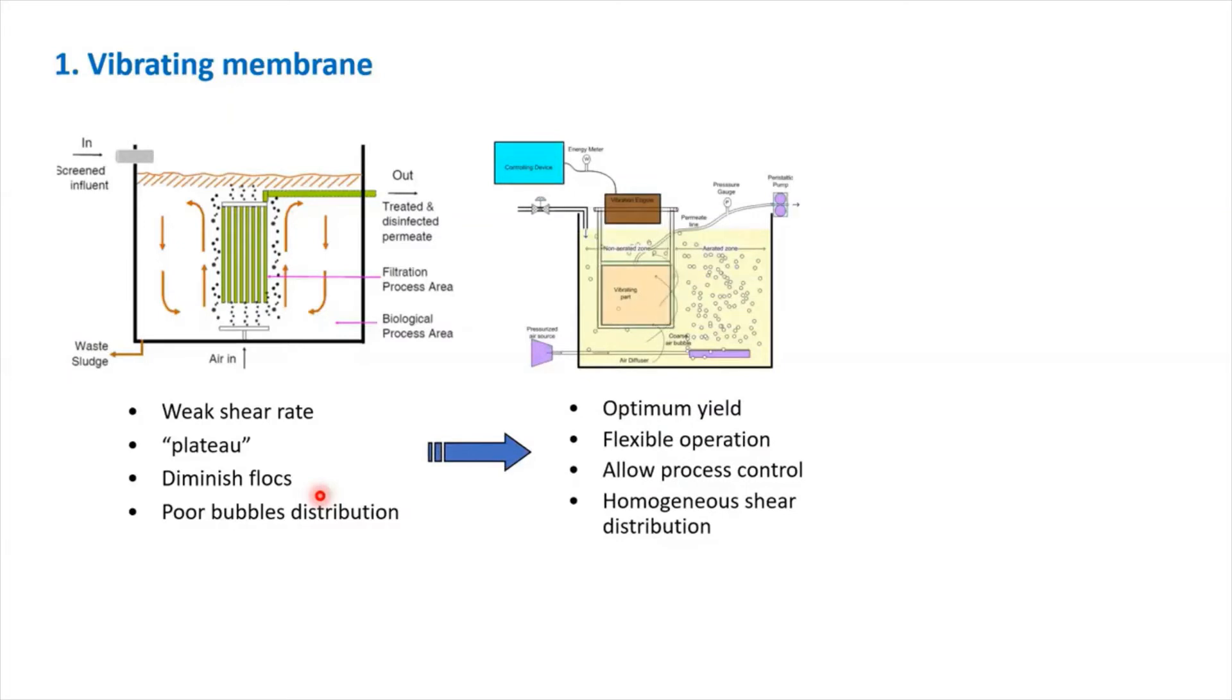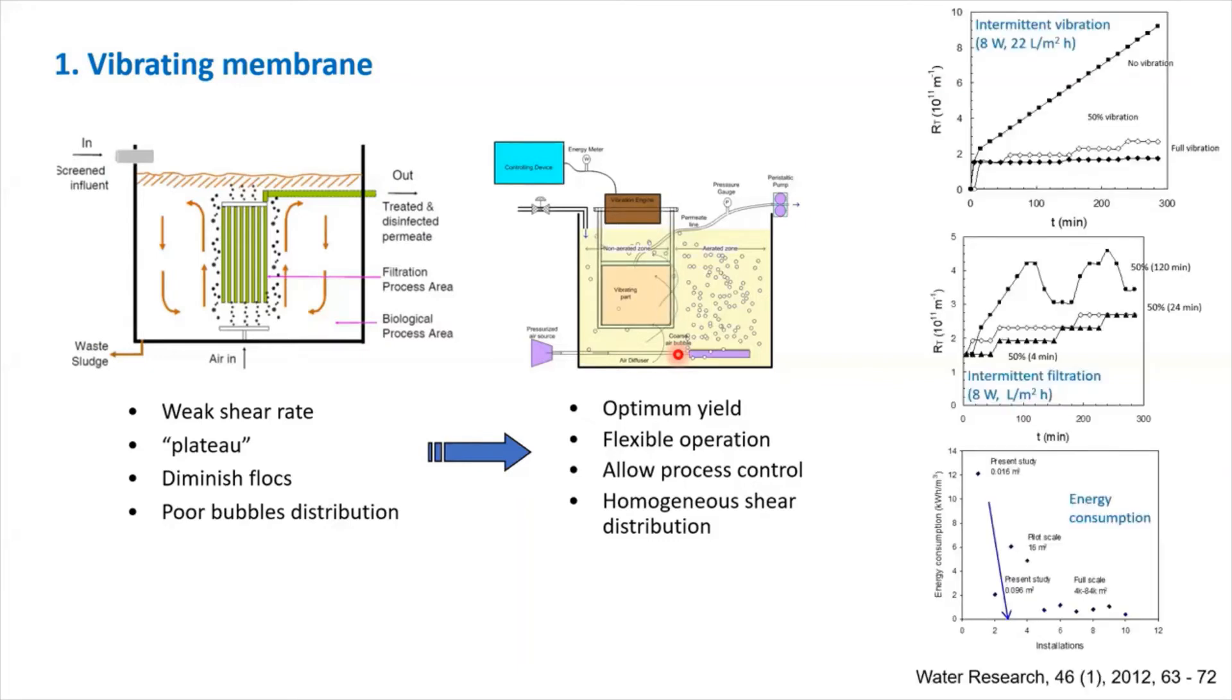What I did in my study was, instead of using the extensive aeration, why don't we just vibrate the membrane, so we can optimize the yield of energy on the membrane surface. It is flexible, which means we can vibrate it when required, because this is an electricity driven vibration. It's a low process control, you can change the vibrating parameters like amplitudes, the frequency and so on in demand. If you have a very bad situation where the fouling is very high, you can then manipulate the vibrating parameters.